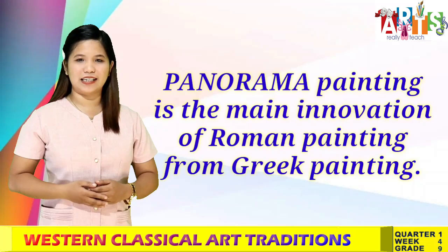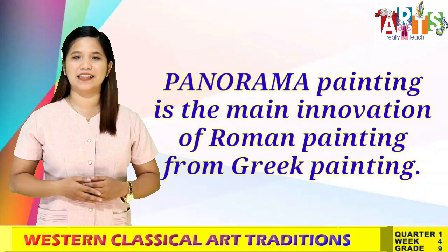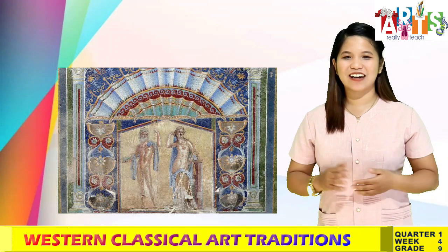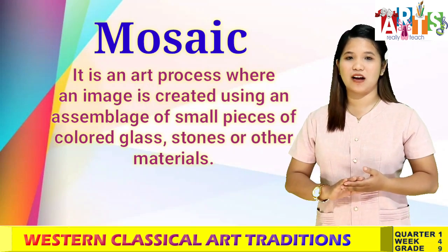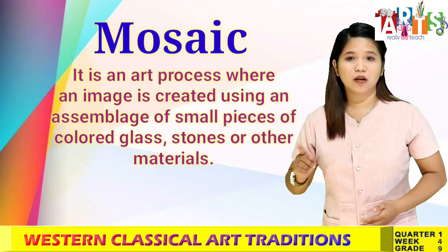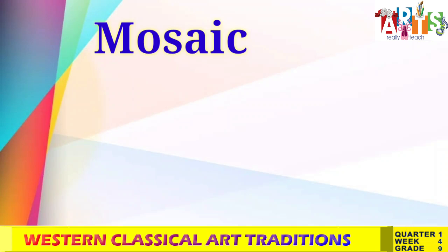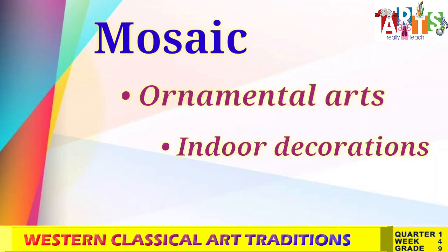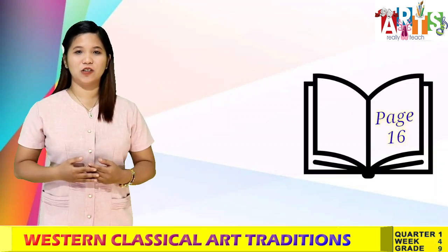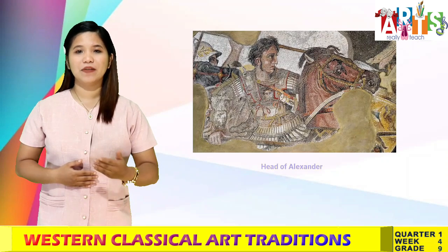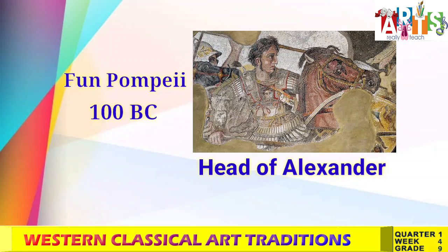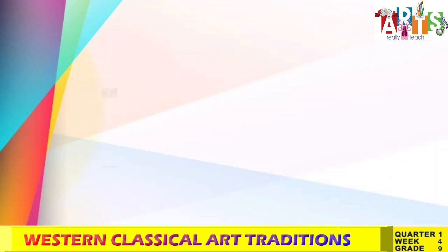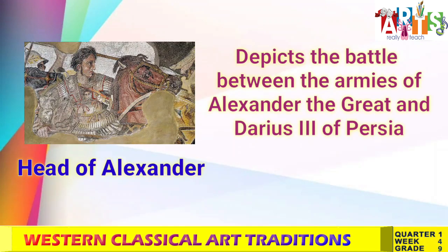The improvement of panorama painting is the main innovation of Roman painting over Greek painting. The Roman era also introduced mosaic, an art process where an image is created using an assemblage of small pieces of colored glass, stone, or other materials. This technique is used for ornamental arts or indoor decorations. The example on page 16 of your module is a mosaic named Head of Alexander — a Roman floor mosaic from the House of the Faun in Pompeii, dated 100 BC. The full mosaic depicts the battle between the armies of Alexander the Great and Darius III of Persia.